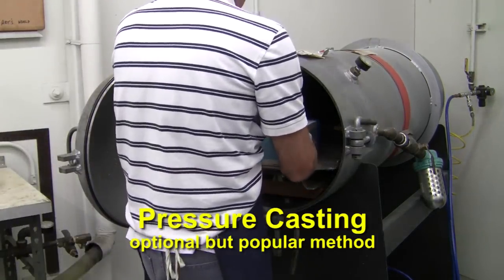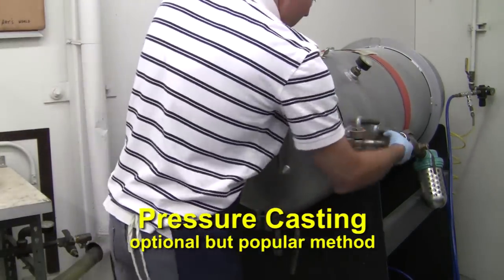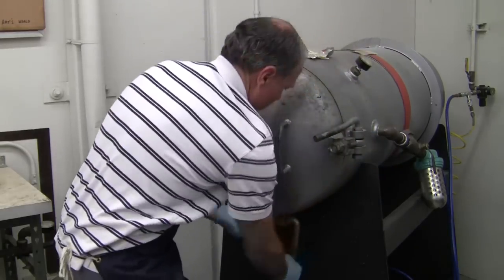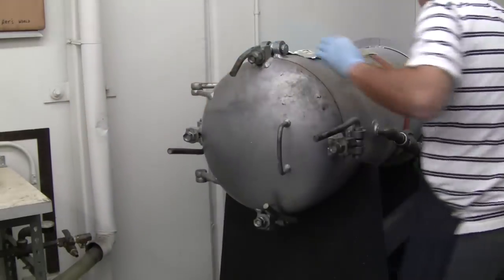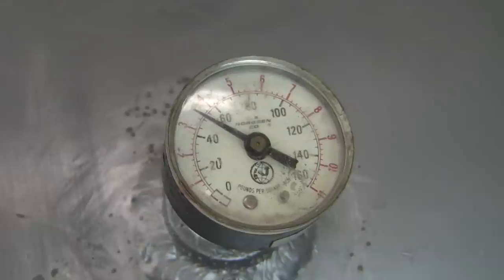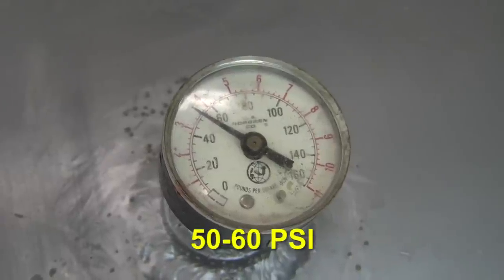We then move our mold into a pressure pot. As mentioned in our other video, pressure casting is an optional but popular method that aids in reducing any incidental bubbles that get trapped in the mold geometry. Common pressures used are in the 50 to 60 psi range.